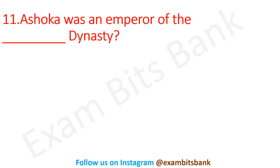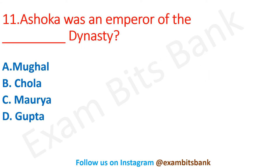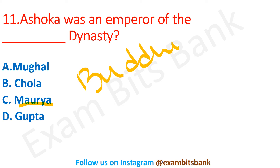Next question: Ashoka was an emperor of which dynasty? Options are Mughal, Chola, Maurya, or Gupta. The correct answer is option C — Maurya. Ashoka was an emperor of the Maurya dynasty. After the Kalinga War, Ashoka accepted Buddhism and he constructed monuments such as the Sanchi Stupa.